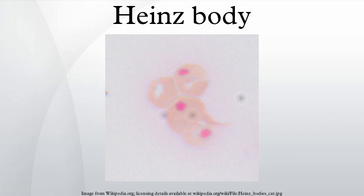Heinz bodies can also be found in chronic liver disease. In alpha-thalassemia, normal adult hemoglobin is composed of two alpha and two beta chains. Alpha-thalassemia patients have partial or complete defects in alpha-globin production, leading to a relative abundance of beta-globin chains. These excess beta-globin chains aggregate to form HbH, which has decreased solubility and precipitates in the red blood cell cytoplasm. This is not direct damage to hemoglobin per se, but rather a perturbation in the quaternary structure of hemoglobin.